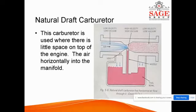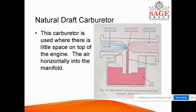Natural draft is when flow occurs automatically. For example, water tanks are kept on the upper portion of a house and automatically water enters all the taps — that is called natural draft. In this type, with space on top of the engine, air flows naturally into the manifold. It is mainly used in bikes because the fluid flows automatically due to gravity.